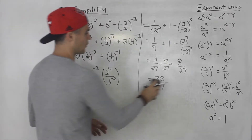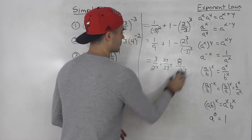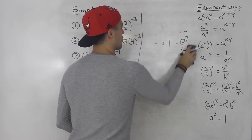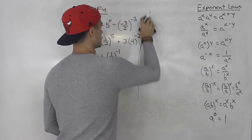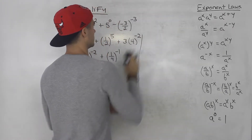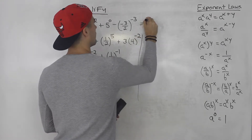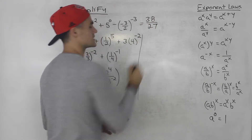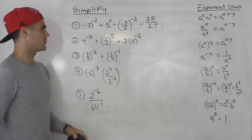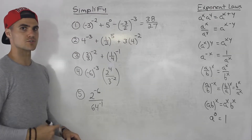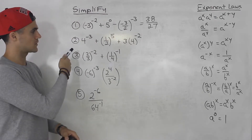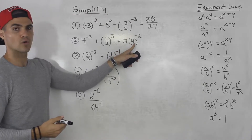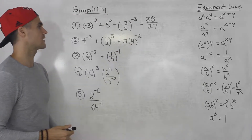So that's the answer for number one: 38 over 27. Moving on to number two, we got four to the negative three, plus one over two to the power of five, plus three times four to the negative two.